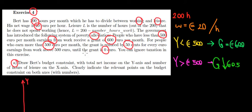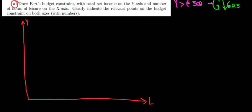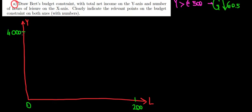We have to draw the budget constraint — one without the grant and one with the grant. Let's first do the one without the grant because it's simple. We have 200 hours in total and a wage of 20 euros per hour. We have income and leisure as our two goods on the axes. At most we could have 200 hours of leisure, meaning zero income because we would not be working. On the other side, at most we could have 200 hours of work times 20 euros per hour, which is worth 4,000 euros, but with zero leisure.